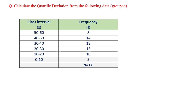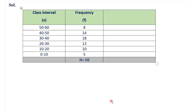Now we are going to calculate quartile deviation from grouped data. We will take one example of grouped data. In this, data is given in the form of class intervals and frequencies. The class intervals are in continuous series and in ascending order. If your class intervals are not in continuous series and ascending order, first convert them. If N is not given, calculate it first. N means sum of frequencies; here N is equal to 68.